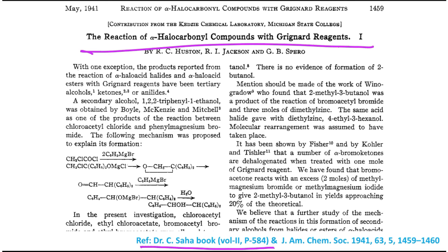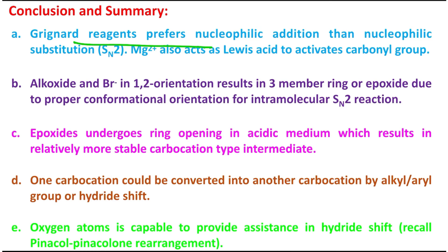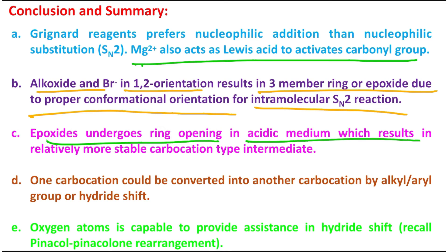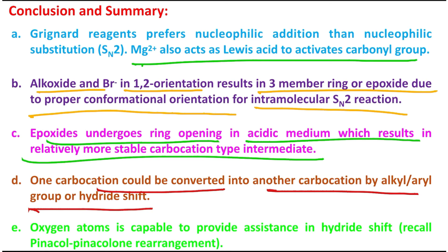In conclusion: Grignard reagent prefers nucleophilic addition over nucleophilic substitution (SN2) because magnesium acts as a Lewis acid and activates the carbonyl group. Alkoxide and bromide in a 1,2-orientation can result in a three-membered ring (epoxide) due to proper conformational orientation for intramolecular SN2. This epoxide undergoes ring opening in acidic medium, resulting in a relatively more stable tertiary carbocation intermediate. One carbocation can be converted into another by alkyl, aryl, or hydride shift — here a hydride shift is more favored for both electronic and steric reasons. Please recall the pinacol rearrangement, which I've already discussed in a dedicated lecture.